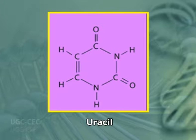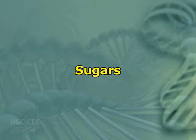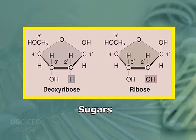Thus, three of the nitrogenous bases are found in both DNA and RNA, whereas thymine is unique to DNA and uracil is unique to RNA. Now, sugars — both DNA and RNA have five-carbon sugars and all sugars are pentoses. But DNA contains D-deoxyribose and RNA contains D-ribose. Deoxyribose has one oxygen less at C2 compared to ribose.